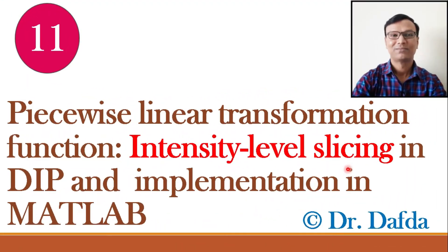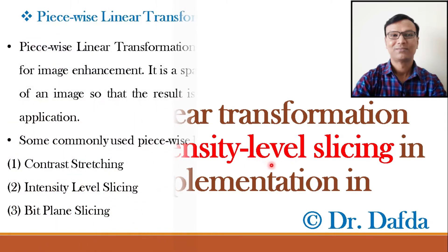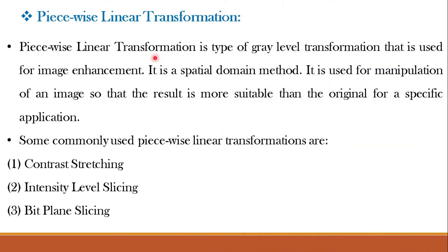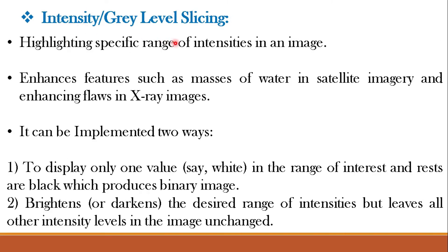As the name suggests, it is intensity level slicing or gray level slicing. That means we will be slicing some particular gray levels from the image and hence enhancing the image. We saw in the previous class that piecewise linear transformation functions are of three types: contrast stretching, intensity level slicing, and bit plane slicing. Contrast stretching we have already learned. In this video lecture we will see intensity level slicing, which is used to highlight some specific range of intensities in an image.